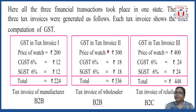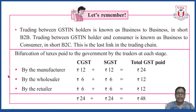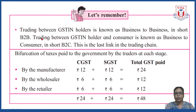Trading between GST identification holders (businessmen) is called business to business, or B2B in short. Trading between a GST holder and a consumer is known as business to consumer, or B2C in short. B2C is the last link in the trading chain.